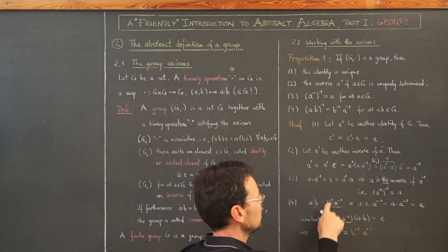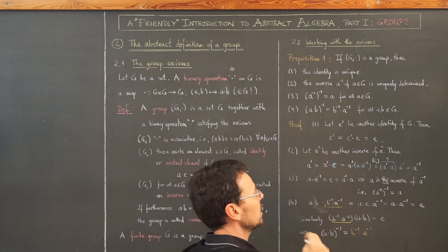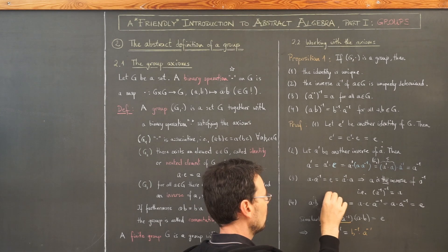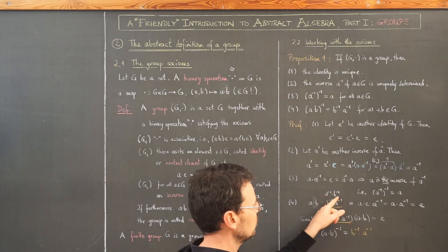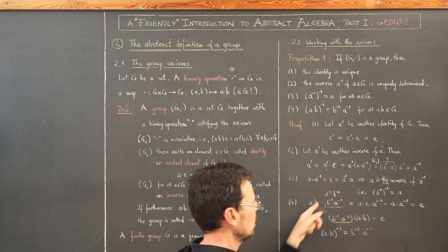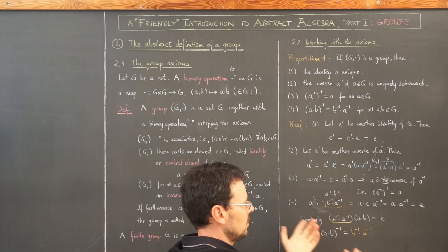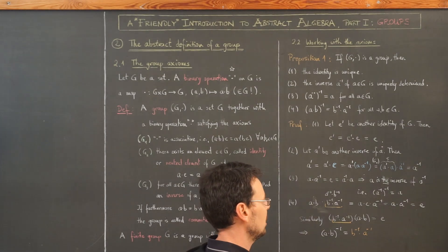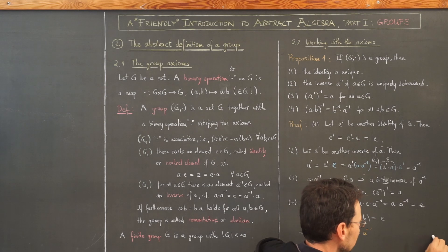The inverse of the composition a·b is b⁻¹·a⁻¹. You can see why the order is reversed: if the group is non-commutative and you write a⁻¹·b⁻¹, that doesn't help because b and a⁻¹ don't necessarily combine to the identity. That's why the order is reversed.